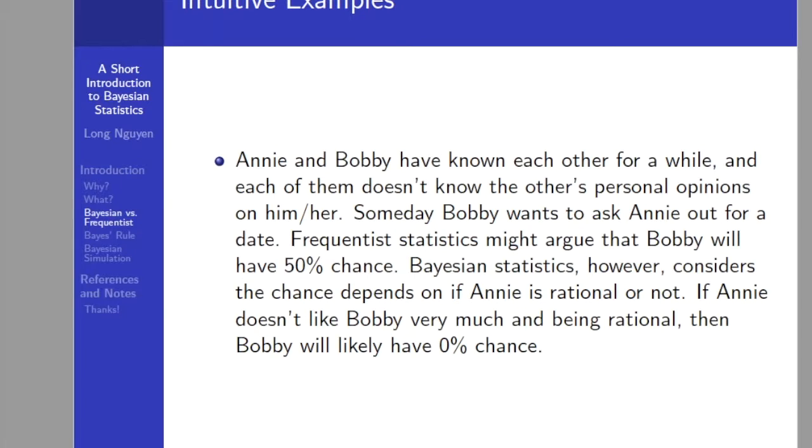Let's think about an intuitive example. Annie and Bobby have known each other for a while, and each of them doesn't know the other's personal opinions on him or her. Someday Bobby wants to ask Annie out for a date. Frequentist statistics might argue that Bobby will have a 50% chance of winning the date. But on the other hand, Bayesian statistics considers the chance depends on if Annie is rational or not. If Annie doesn't like Bobby very much and being rational, then Bobby will likely have 0% chance.